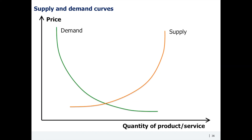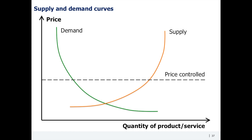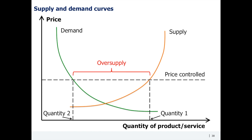Those were examples of shifts of demand and supply curves, which should be distinguished from movements along the curves. Movements happen whenever there is a change in the price level while customer or company behavior remains the same. For instance, the introduction of price controls by the government is likely to change demand and supply volumes but not to shift the curves. With a lower or higher fixed price, there will be new demand and supply volumes, but the position of the curves will remain the same, all else equal.